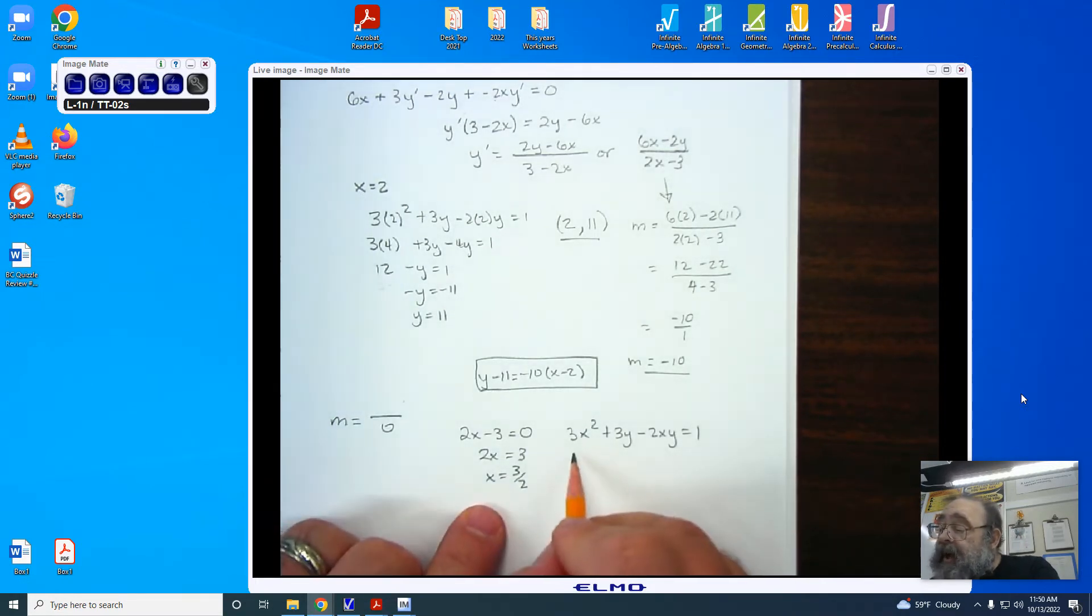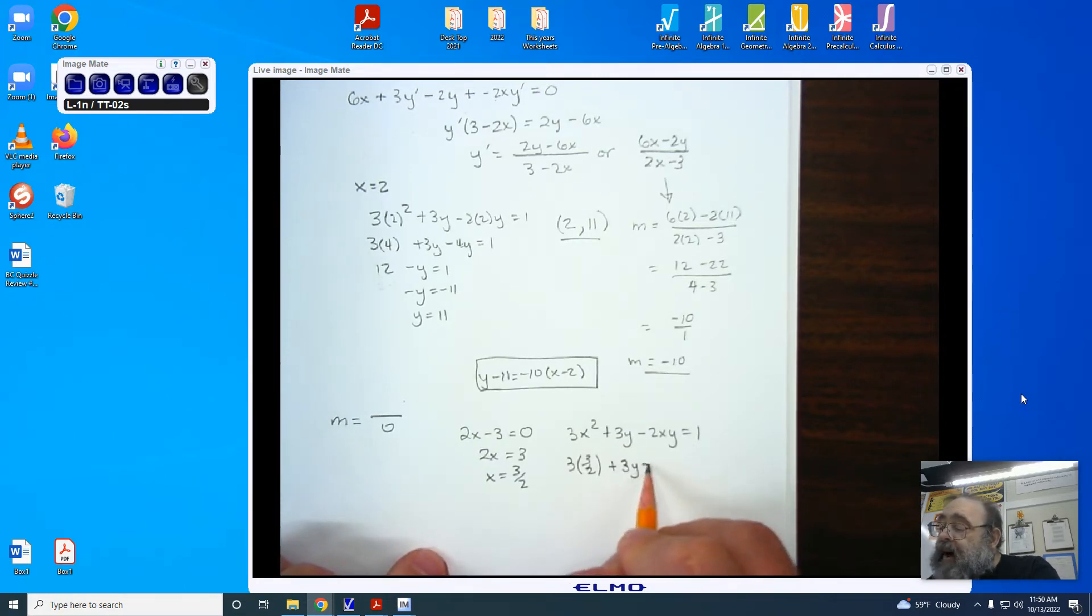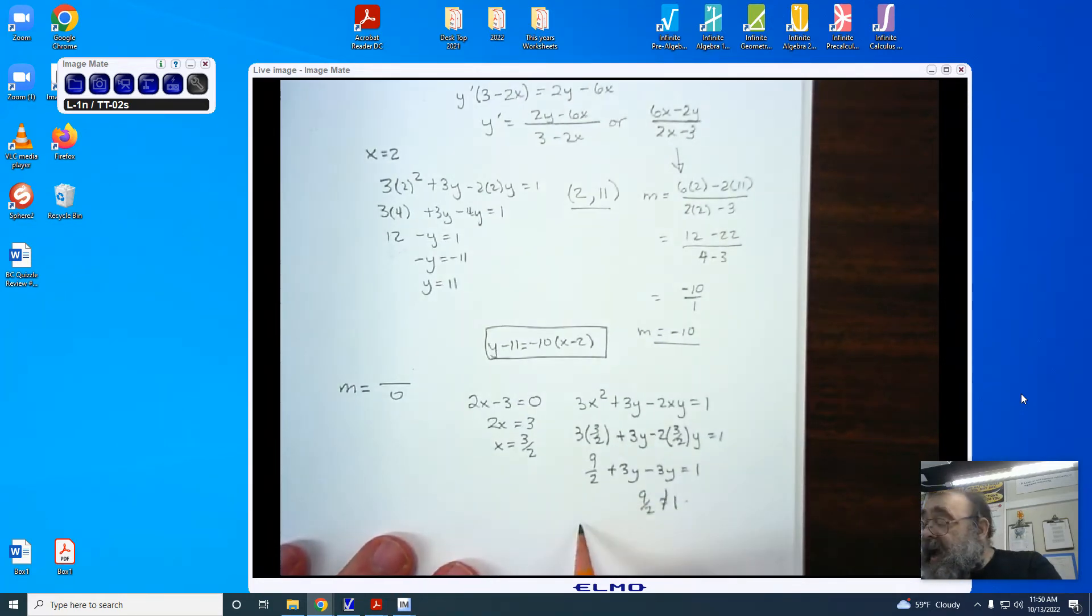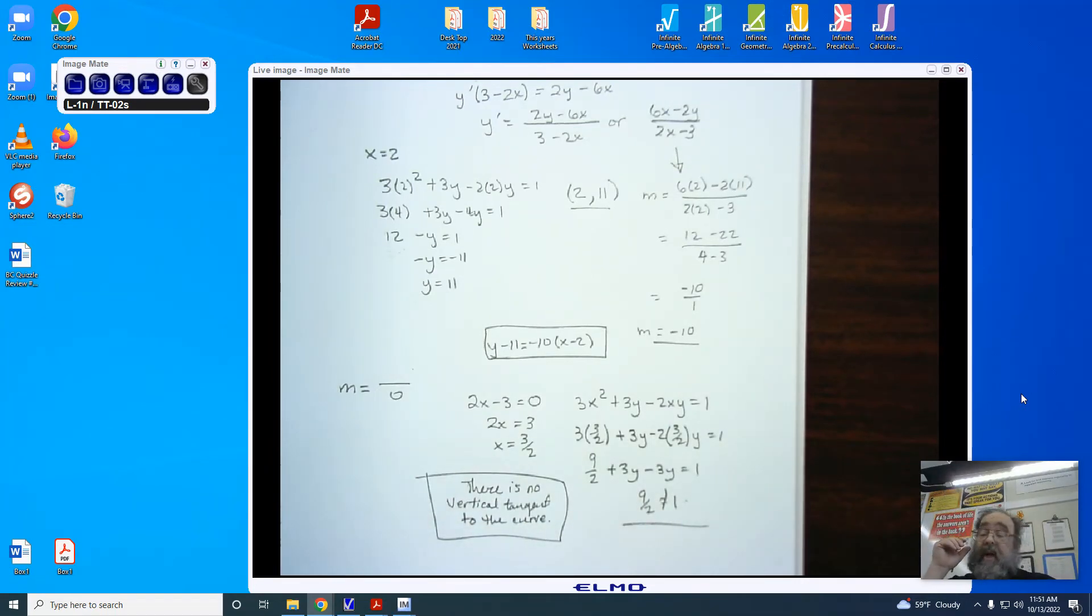We're going to end up taking our x and plugging it in. So we have 3 halves, we have 3y minus 2, 3 halves, we have y equaling 1. This gives me 9 halves plus 3y minus 3y equaling 1. Uh-oh. 3 halves does not equal 1. There is no value of x or y that gives me a vertical tangent. So there is no vertical tangent to the curve. And this is why. There's no solution there. There's nothing for us to do.